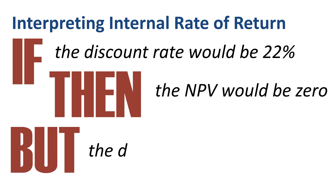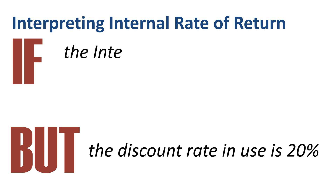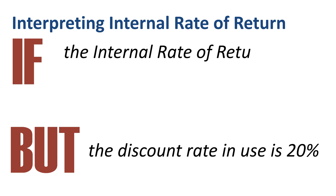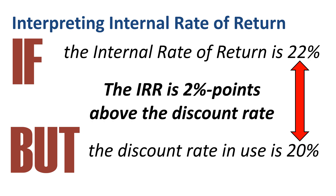But the actual discount rate in use is 20%. So is this a good or a bad outcome? If the internal rate of return is 22% but the actual discount rate in use is 20%, then the IRR is 2 percentage points ahead of the target, hence worth doing. The IRR is exceeding the target.